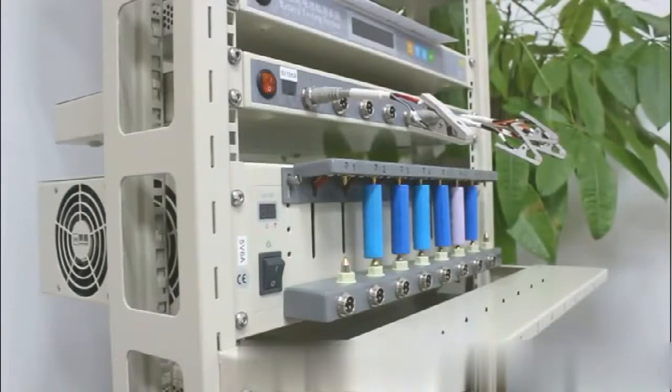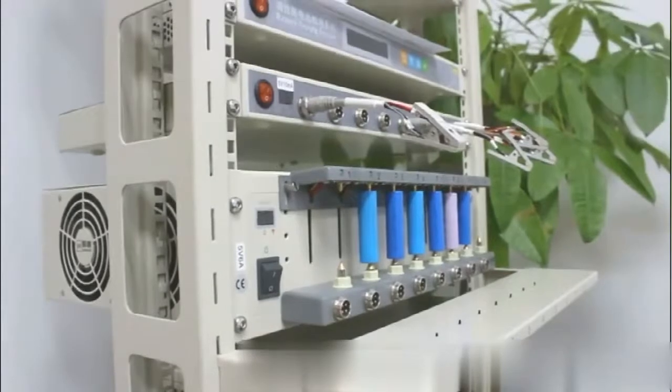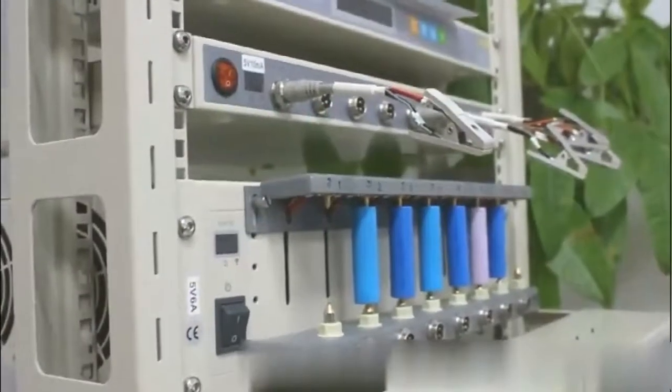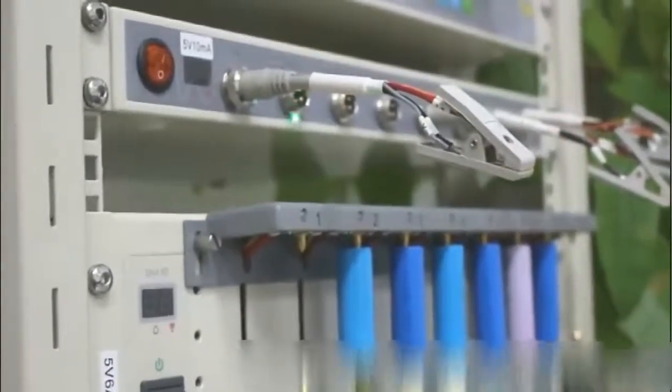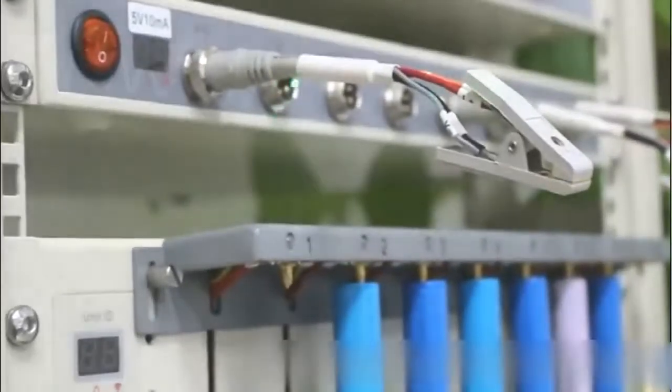All our clamps use the Kelvin connection. As you can see here, we have four different cables. Two for voltage, two for current.